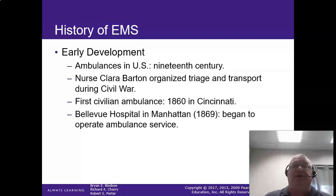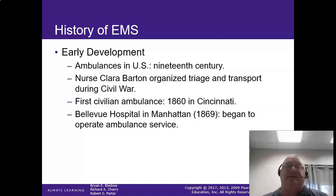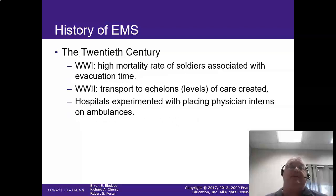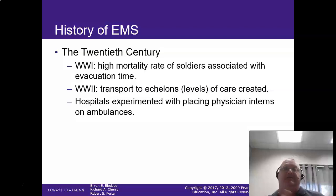Clara Barton organized the Red Cross during the Civil War. The first ambulances were in 1860 in Cincinnati, and then Manhattan began to operate an ambulance service — though it was more of a livery than anything, delivering patients between hospitals. In World War I, they used ambulances to move wounded away from the battlefield and get them proper care.